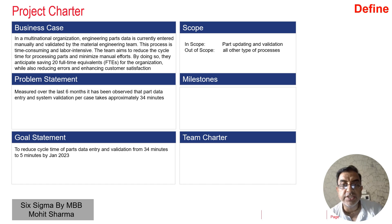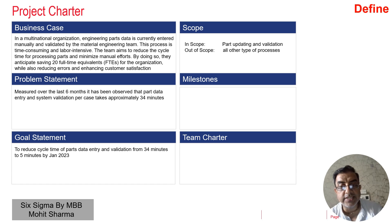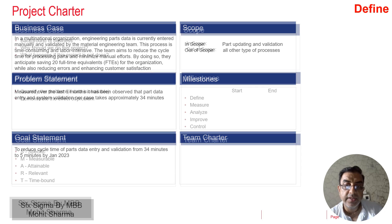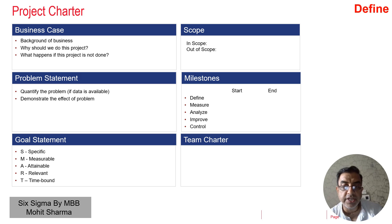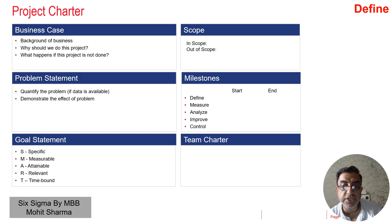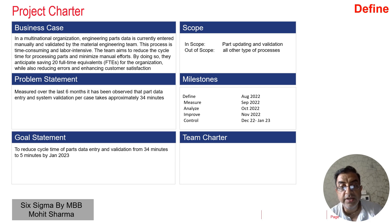The next important element in a project charter is milestones. If you are doing a DMAIC project you have to define the DMAIC milestones — Define, Measure, Analyze, Improve, and Control. You need to identify when you are starting the Define phase and when you are ending the Control phase. In the example we are taking, the Define phase starts in August 2022 and the Control phase will end in January 2023.